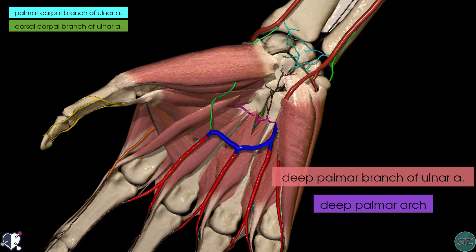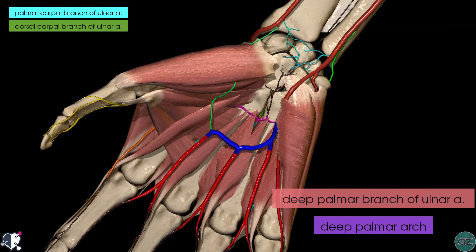I've just added in the layer of muscles and you can see how the deep palmar branch of the ulnar artery passes through the origin of the hypothenar muscles to anastomose with a branch of the radial artery to form the deep palmar arch, which is highlighted in purple.